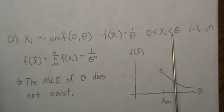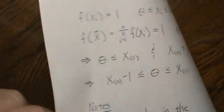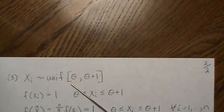Well, it's not. So the MLE in this situation, uniform zero to theta where there's no equal signs, doesn't exist.